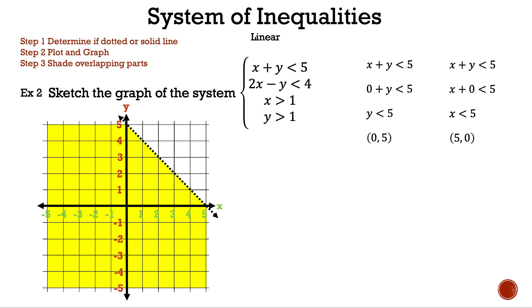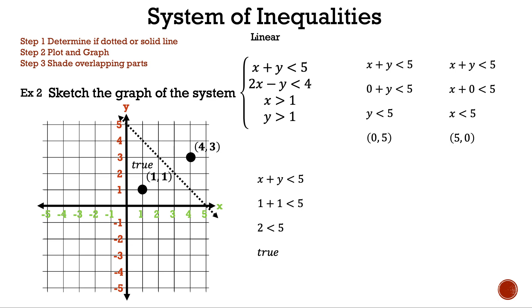Remember, we either shade to the left or to the right. We can always pick two points, one on each side of the line, and shade where it's true. This time, we pick the points (1, 1) and (4, 3). Substituting (1, 1) into y plus x is less than 5 gives true, because 2 is less than 5. Substituting (4, 3) gives false, because 7 is less than 5 is not true. Now we know to shade to the left.